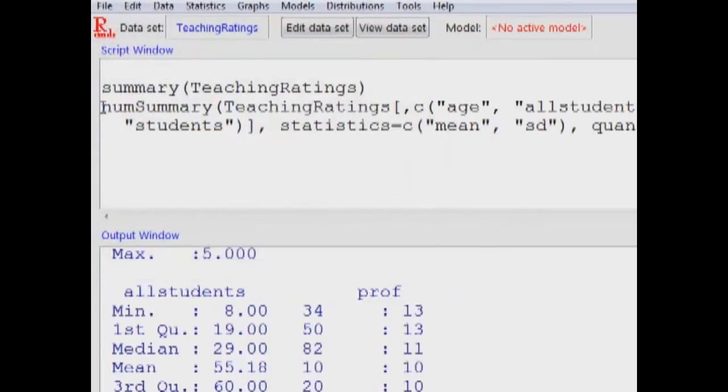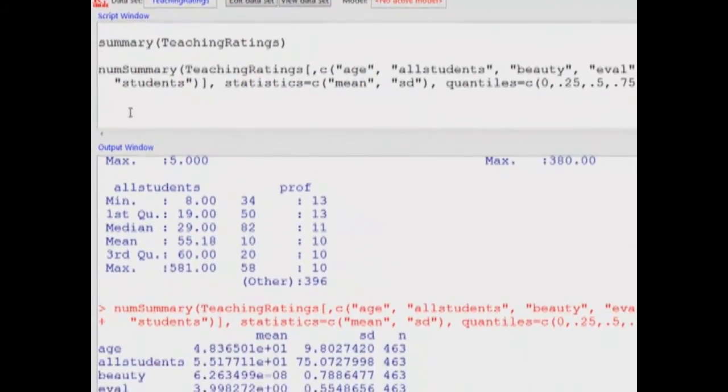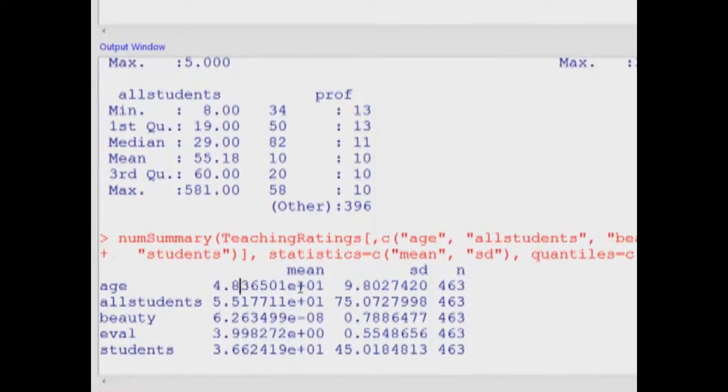Here's the command that was run for numerical summaries, and the output is right here. Age is 48.3. Notice this is 10 to the power of 1, and the average number of students in a course is 55.1, and I get the standard deviation as well.